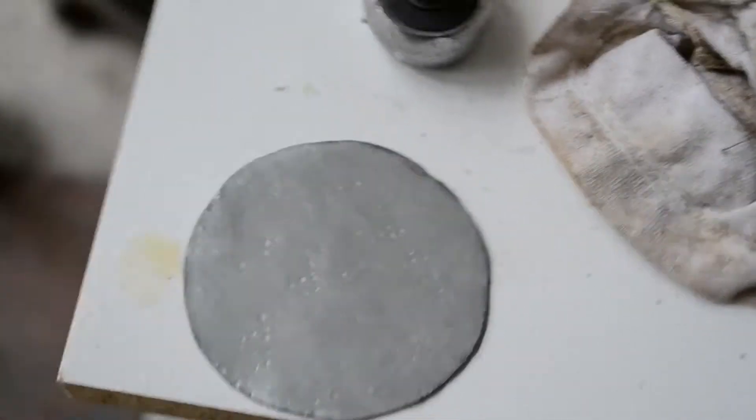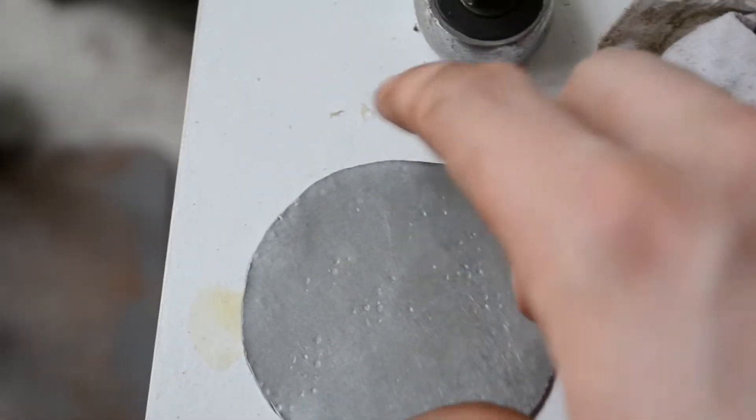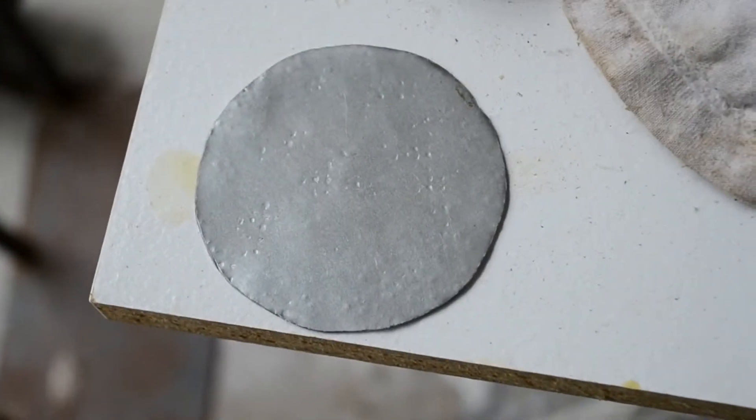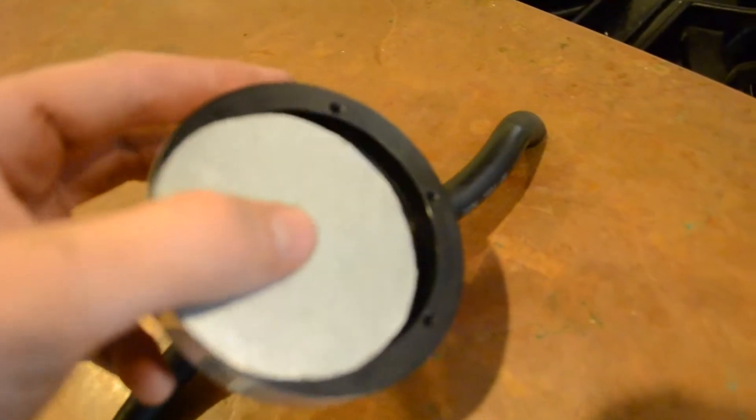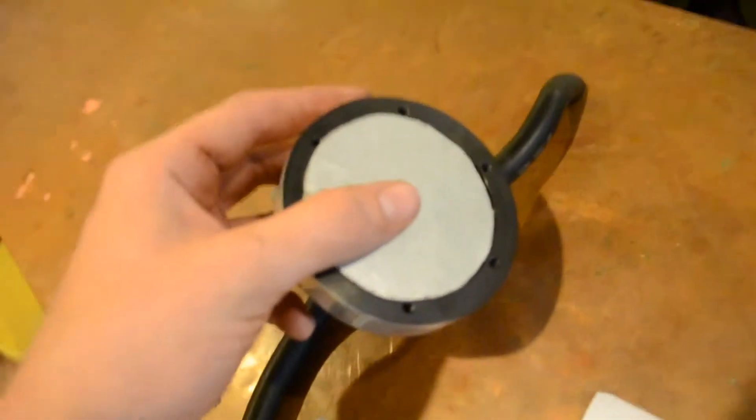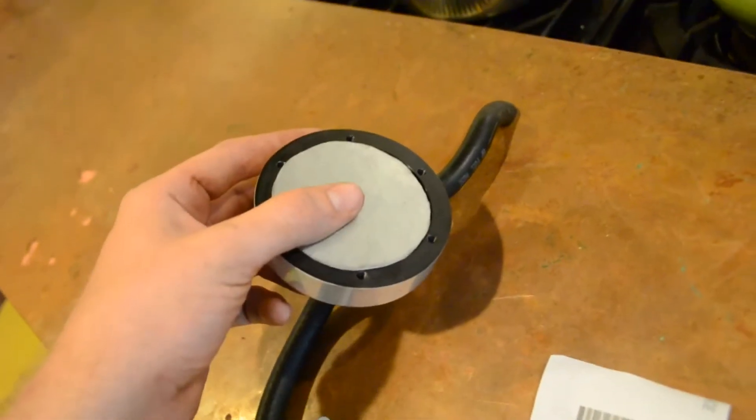There you have it. That is a 12 to 1 size FMU disc. Let's go check the fitment inside the actual FMU. It's still just a little too big to go in there, so I'm going to go take off some more and at the same time try and make it a little bit more round.